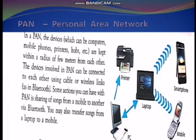First one is PAN — personal area network. The devices can be computers, mobile phones, printers, etc. In the figure you can see a printer, laptop, smartphone, mobile, and also the PC. They are connected within a few meters radius. The devices in the PAN can be connected to each other using cable or wireless links such as Bluetooth. For example, transferring songs from a laptop to a mobile phone using Bluetooth — that is a wireless link.